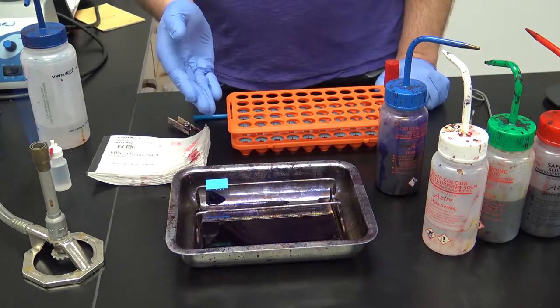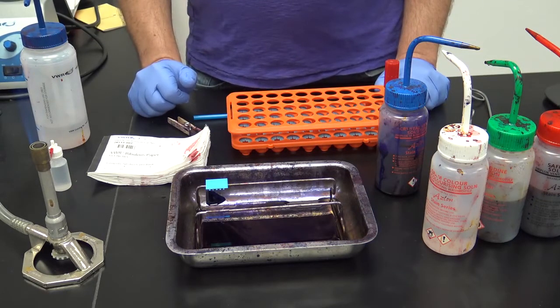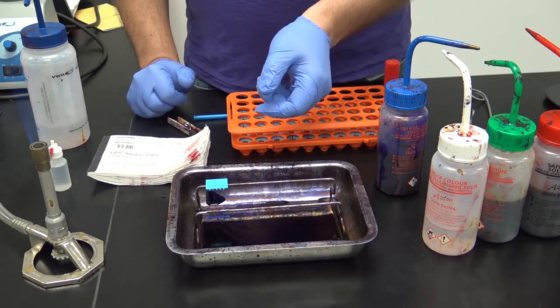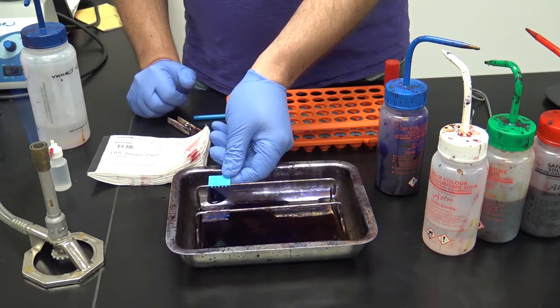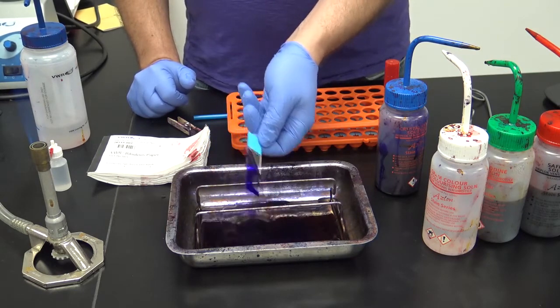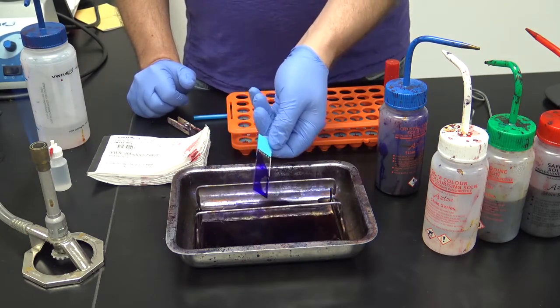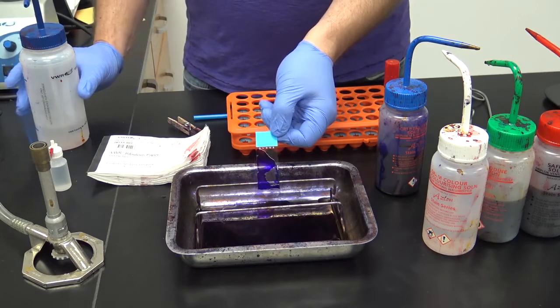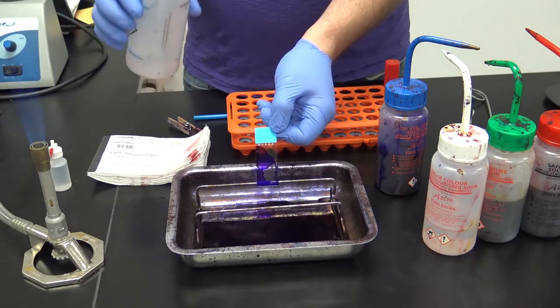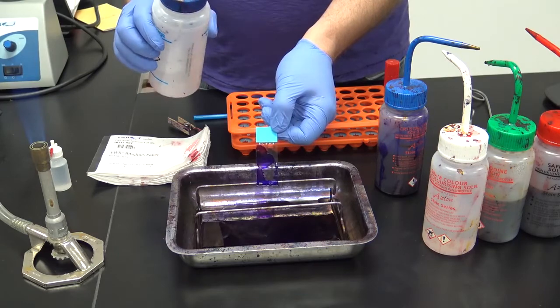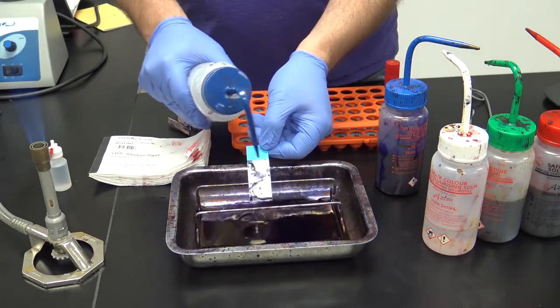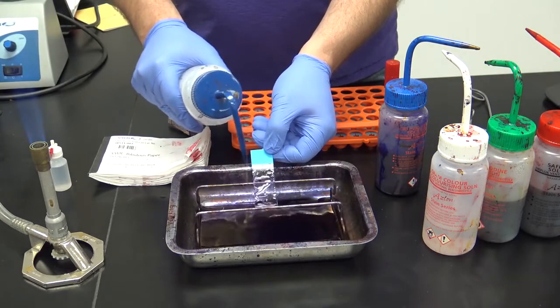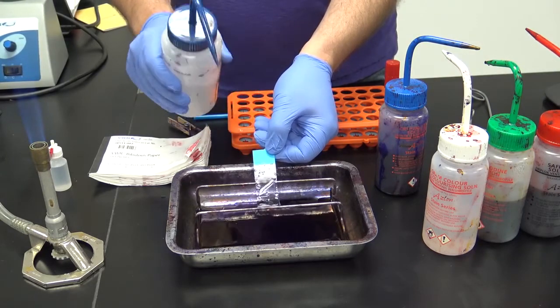Once you have left the stain on for the appropriate amount of time, you will next rinse the slide. To begin, take your slide and dump off any excess that may be present on the slide into the bin. Next, using the distilled water, when rinsing the stain off the slide, tip your slide down and into the bin in order to not splash your manual and your lab partner.